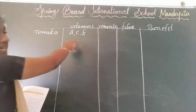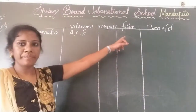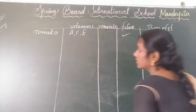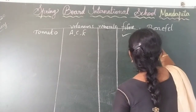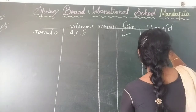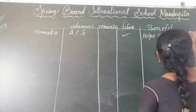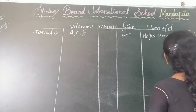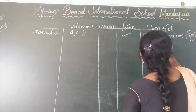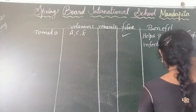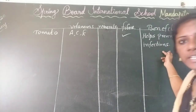In tomato, we know that we have vitamins A, C, and K. Are we getting minerals from tomato? No. And fiber? Yes. So it can help prevent infections and keep the bones healthy.